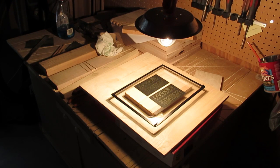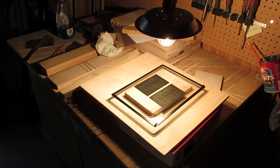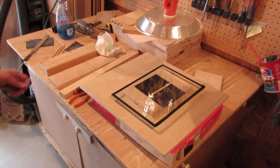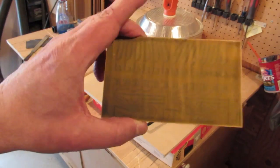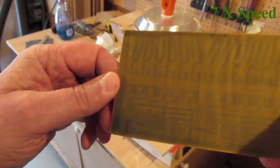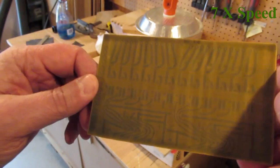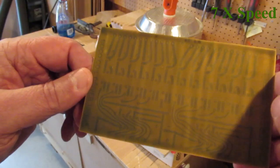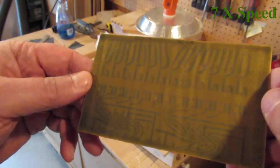The board sat under the light for about one and a half hours. The timing is not an exact science. It needs to set long enough for the exposed photo emulsion to harden. Turn the light off. The photo emulsion will look darker after it's properly exposed. The next step is to rinse the unexposed emulsion off.